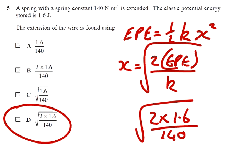A spring with a spring constant of 140 N/m is extended and the elastic potential energy is 1.6 J. The extension is found using elastic potential energy equals 0.5 K x squared. So x is the root of 2 times the elastic potential over K which is 2 times 1.6. So we're looking for the root of that, answer D.